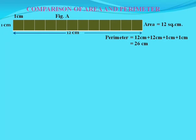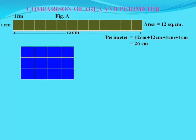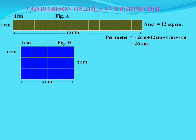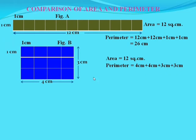Now, these 12 squares are arranged in a different way — this is figure B. Each square still has a side of 1 cm. The length of this rectangle is 4 cm and the breadth is 3 cm. The area of this rectangle is 12 square cm. The perimeter is 4 cm + 4 cm + 3 cm + 3 cm, which becomes 14 cm.